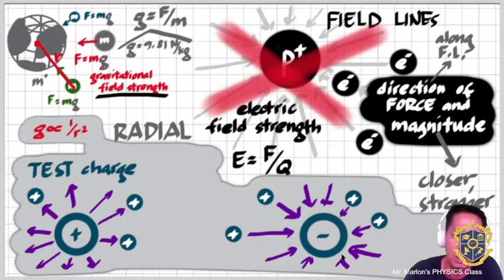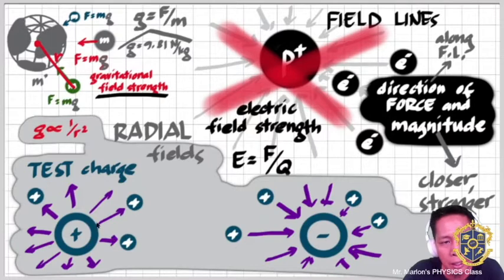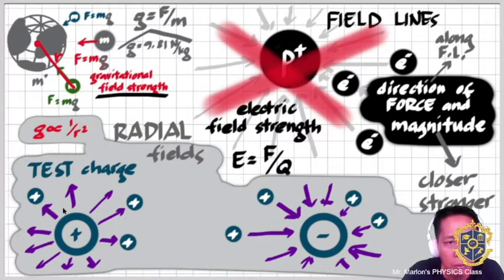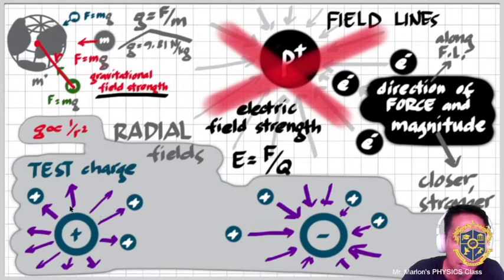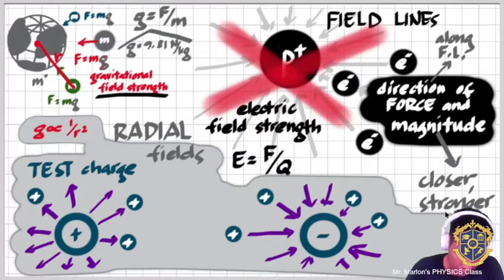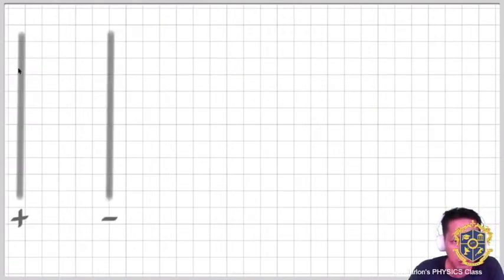For convention: for a positive charge the field lines go outward, for a negative charge they go inward. This kind of arrangement is called a radial field. In a radial field, how strong the electric field is — or how strong the force on a charge — depends on the closeness of the field lines: the closer they are, the stronger the electric field.